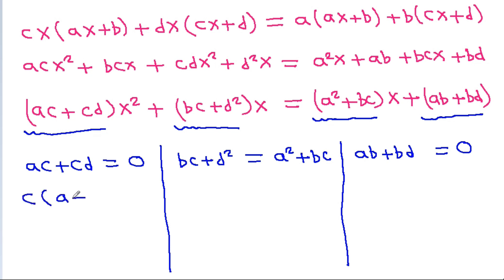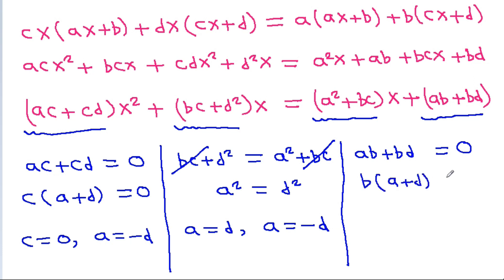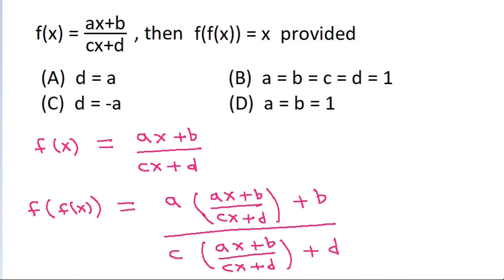From ac + cd = 0: c(a + d) = 0, so either c = 0 or a = −d. From d² = a²: a = d or a = −d. From ab + bd = 0: b(a + d) = 0, so either b = 0 or a = −d. Since a = −d is common to all three cases, the required condition is a = −d, i.e., d = −a.